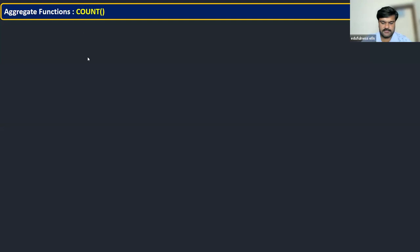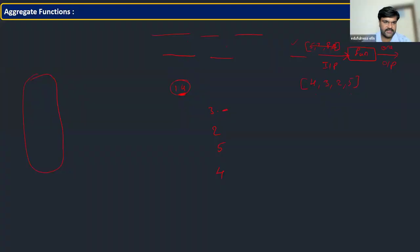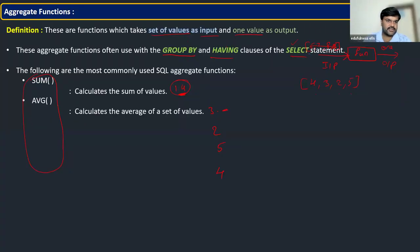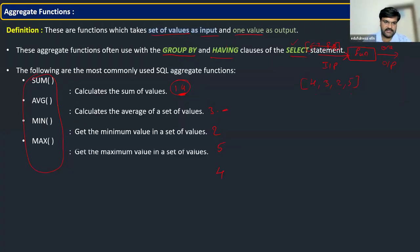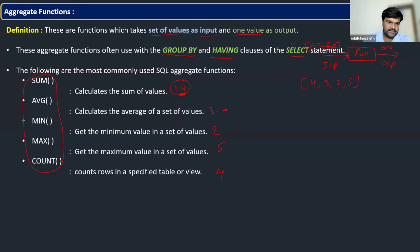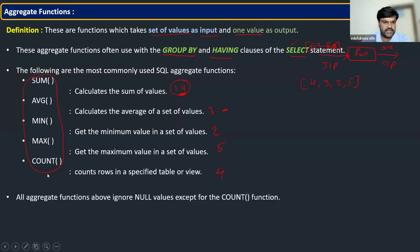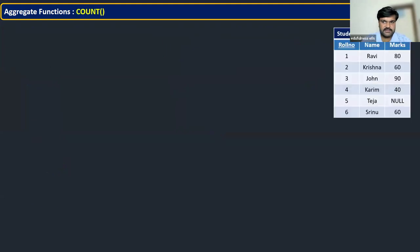So let us start. Yesterday we have seen aggregate functions - we started aggregate functions. Different aggregate functions and their variations we have seen corresponding to the data types. So now let us continue with another aggregate function - only one remains, that is the COUNT aggregate function. Let us try to understand what that is.